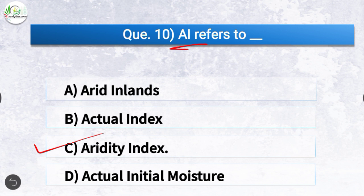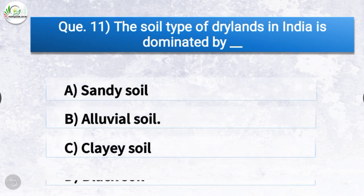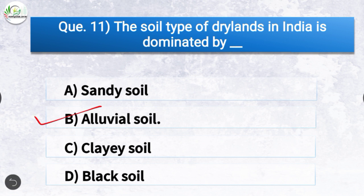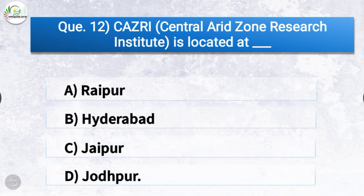Question number eleven: the soil type of drylands in India is dominated by? The correct answer is option B, alluvial soil. Question number twelve: CAZRI, which stands for Central Arid Zone Research Institute, is located at? The correct answer is option D, Jodhpur.